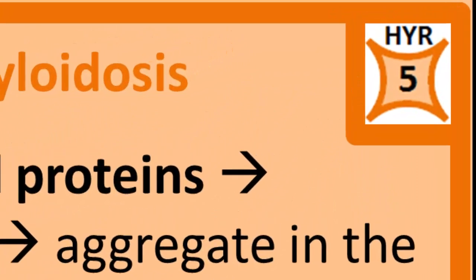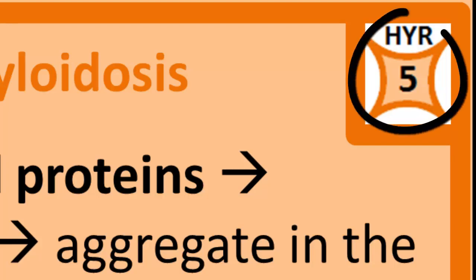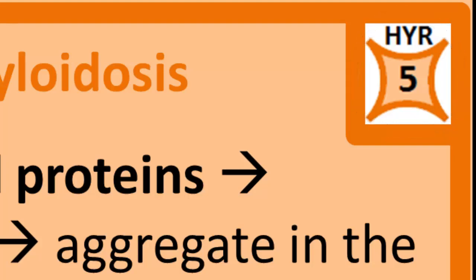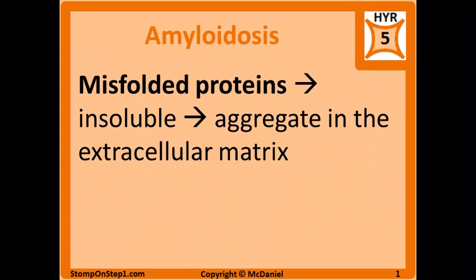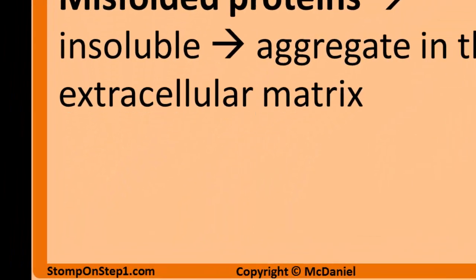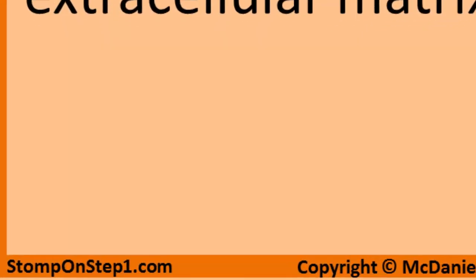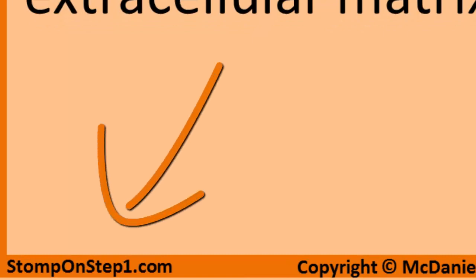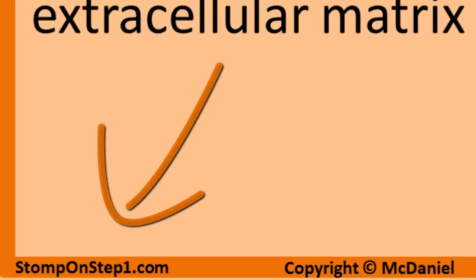You can see here in the top right corner that I give the overall topic of amyloidosis a high yield rating of 5. For those of you that aren't familiar with the high yield rating, it is a scale from 1 to 10 giving you a rough estimate for how important each topic is for the USMLE Step 1 exam. If you want more information about how that's calculated or how to interpret that number, you can head to my website.